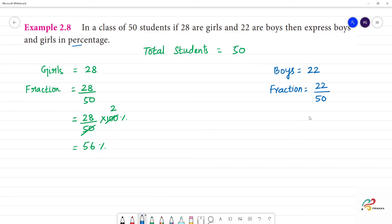Boys. Boys sort of fraction. What is 22 by 50 into 100? So what do we do? Two times. What do we do? 44 percentage.